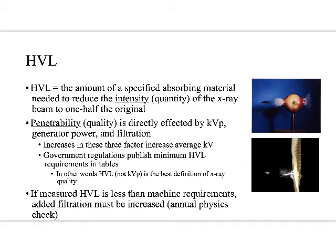What exactly are we saying with half value layer? We're measuring the intensity of this x-ray beam based on what it can penetrate. Can it get through an apple? Can it get through Kevlar? The harder the beam, the more it can get through. But we also wouldn't want to keep increasing KVP endlessly, because we're not trying to image Kevlar — we're trying to image something more like an apple. If everything gets through, there's no picture.